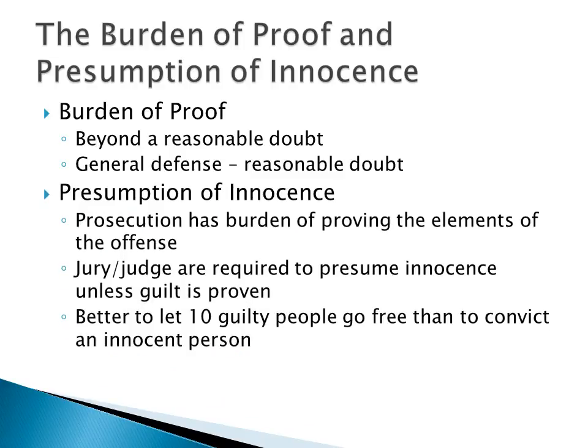In a criminal case, the defendant is presumed to be innocent. Jurors may have their own beliefs and may believe at the beginning of the trial that the defendant is actually guilty until proven innocent, but that's not officially what the presumption is. The presumption is that the defendant is innocent and will remain innocent until the prosecution proves beyond a reasonable doubt that they are in fact guilty. This is how someone can appear to be guilty but still be found not guilty by a criminal jury.